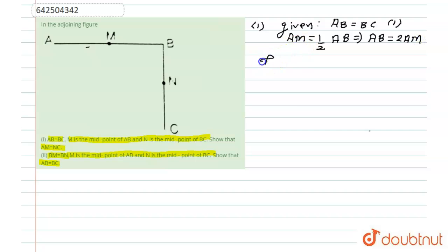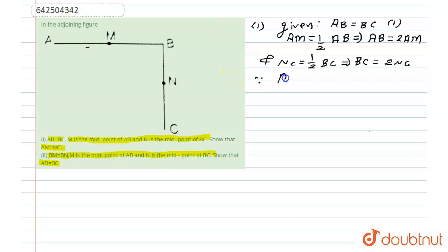Similarly, we can write that NC is half of BC, and this implies that BC is equal to twice of NC. And since we know that according to the question, AB is equal to BC.